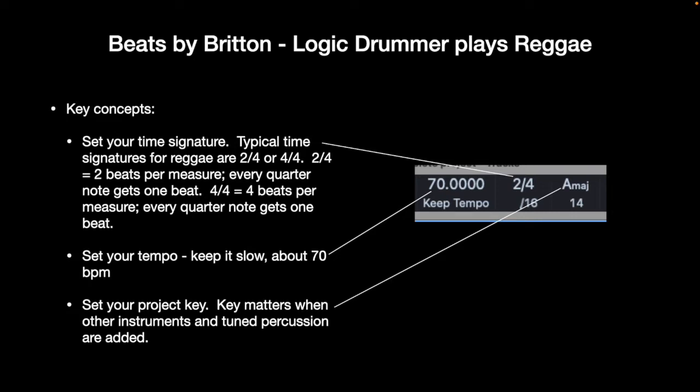When you're in Logic, you're going to set your time signature. Typical time signatures for reggae are two-fourths or four-fourths. Two-fourths equals two beats per measure, and every quarter note gets one beat. Four-fourths equals four beats per measure, and every quarter note gets one beat. It does make a difference. Logic Drummer uses the time signature and the beats per minute, or the tempo. Set your tempo — for reggae you can keep it kind of slow. A good beginner tempo while you're learning is anything between 70 and 80. Our project today is at 70 beats per minute.